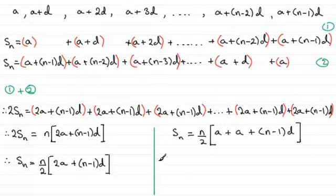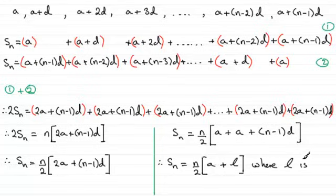So I can change this to, therefore, the sum of the first n terms equals n over 2. We'll put our square bracket again here. And then we've got a plus, and instead of a plus n minus 1d, I'm just going to write that as being our last term. Just write it as l. Let's just say where l is the last term, the last term. Or you could say it is the nth term. Let's just squeeze that in there, the nth term.